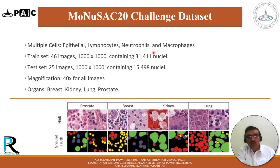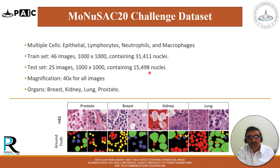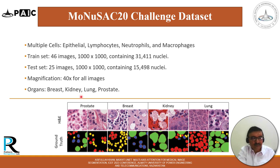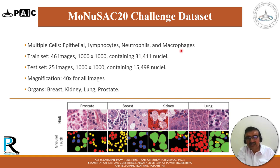We also tested on the ManuSeg20 challenge dataset, which is more challenging. It includes multiple cell types: epithelial, lymphocytes, neutrophils, and macrophages. It has 46 training images of 1000×1000 pixels containing about 31,500 nuclei, and 25 test images containing about 15,500 nuclei. Magnification is 40× for all images, with organs including breast, kidney, lung, and prostate. Unlike ManuSeg18, this is a multi-class segmentation problem with four different cell classes, making it even more challenging.